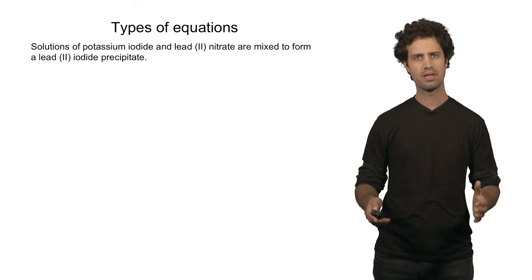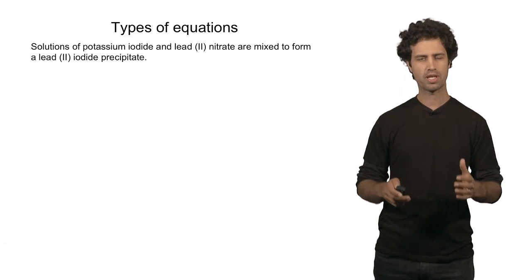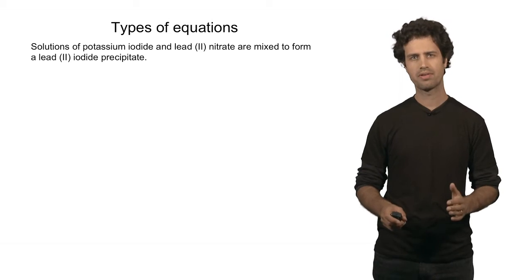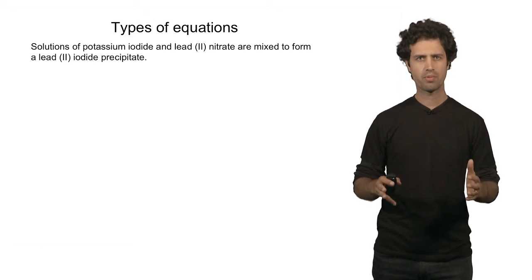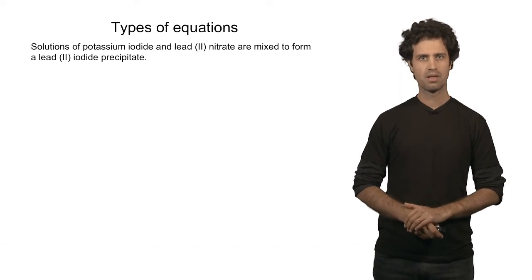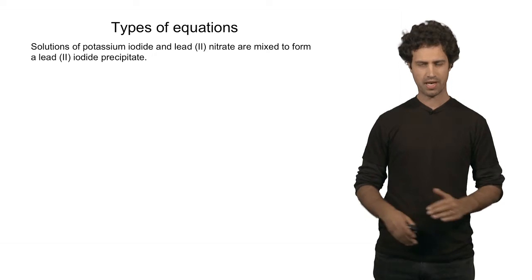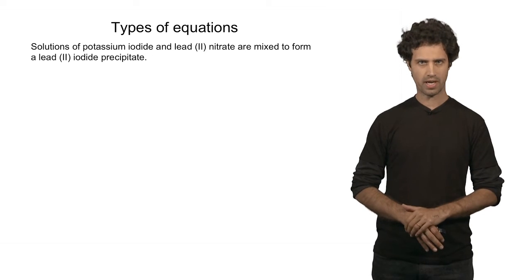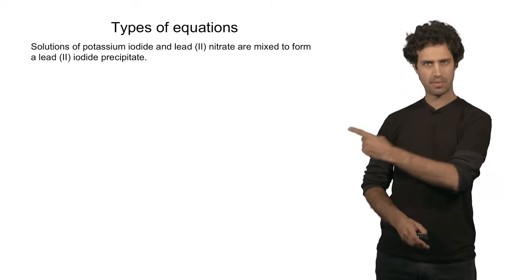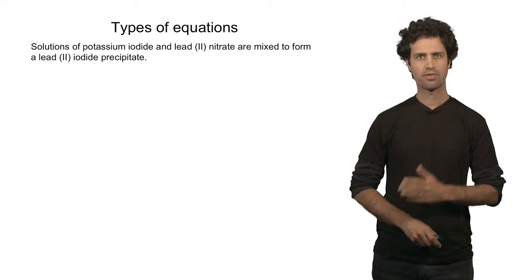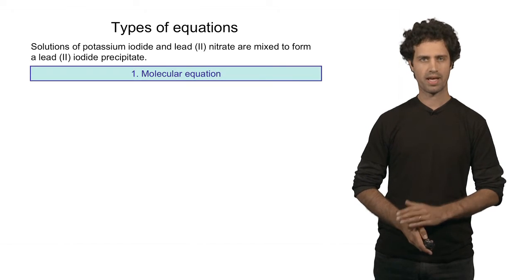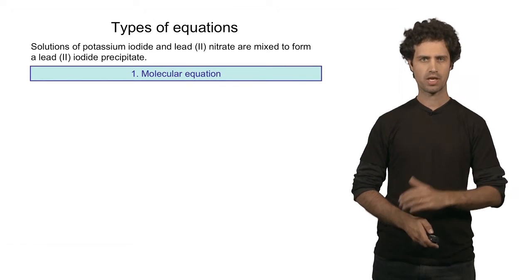How do we write down the chemical equation for this reaction? It turns out there's a variety of ways in which we can do that. In this segment we'll be discussing three different ways in which to write a chemical equation like this. The first way to write it down is in the form of a molecular equation.